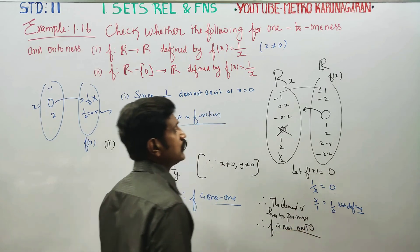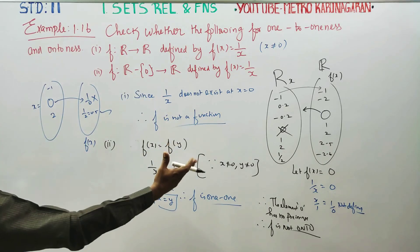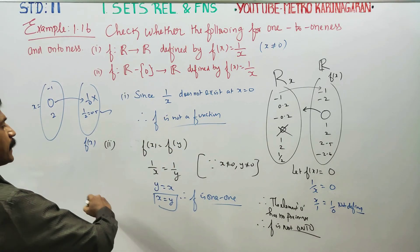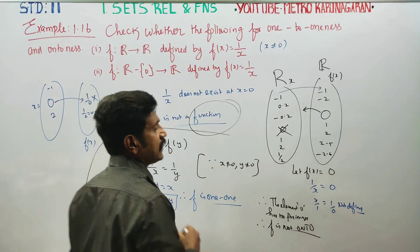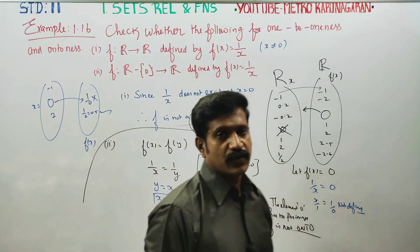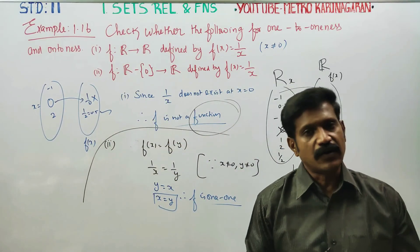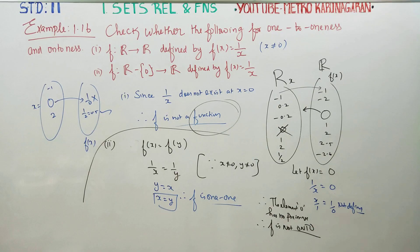So f is not onto. The function passes the one-one check but fails the onto check. Since the element 0 has no pre-image, the question of onto does not arise. Therefore, f is one-one but not onto. Thank you.